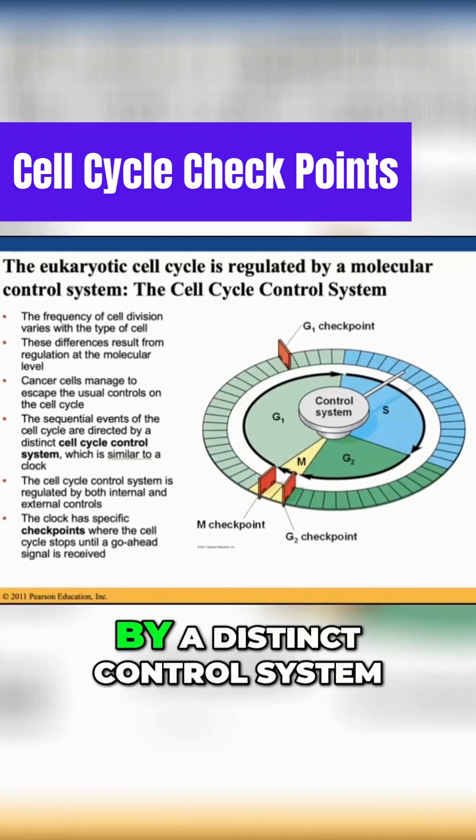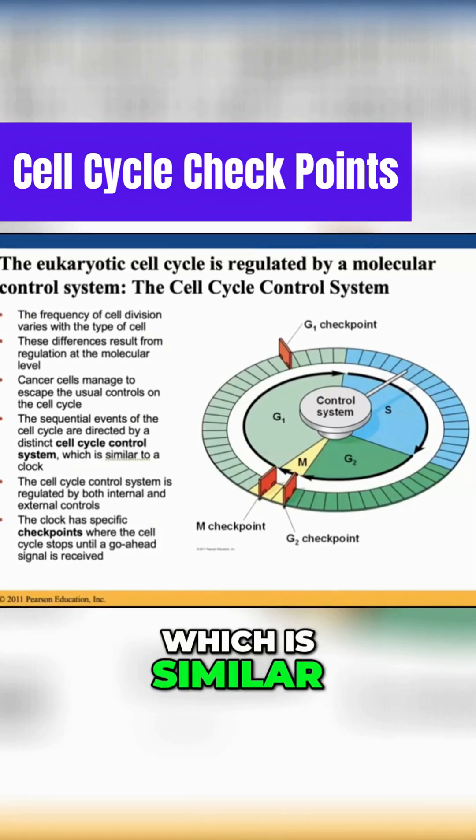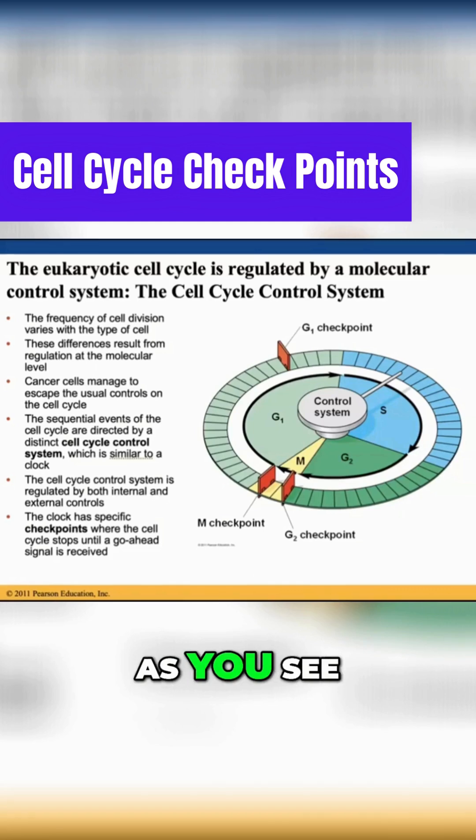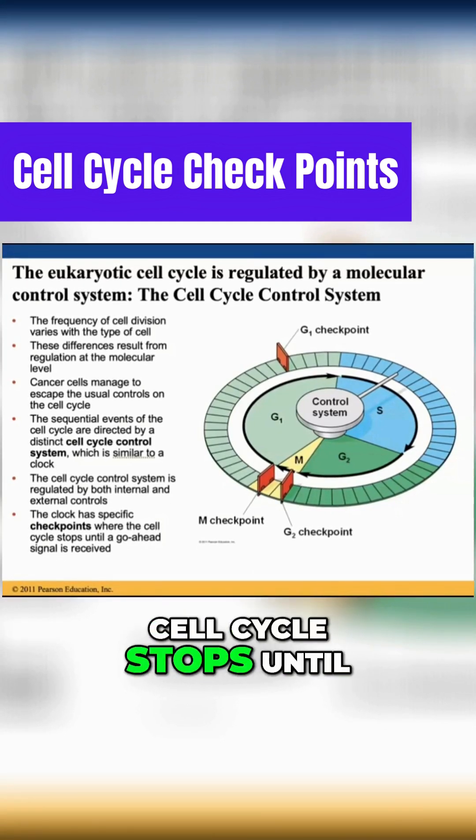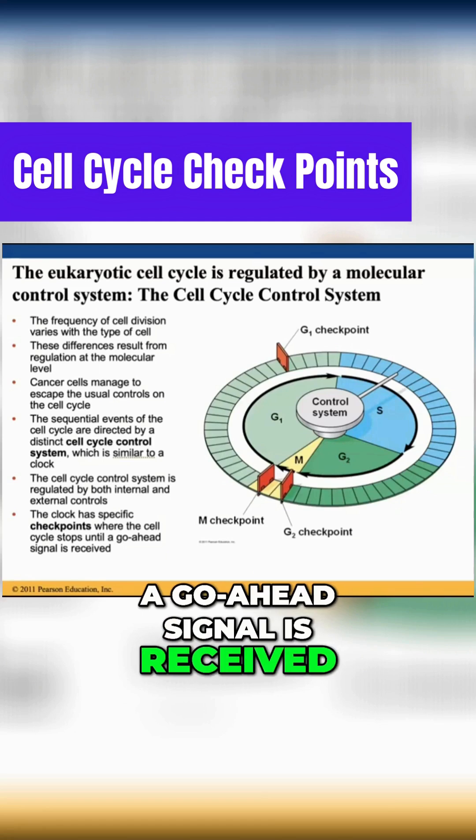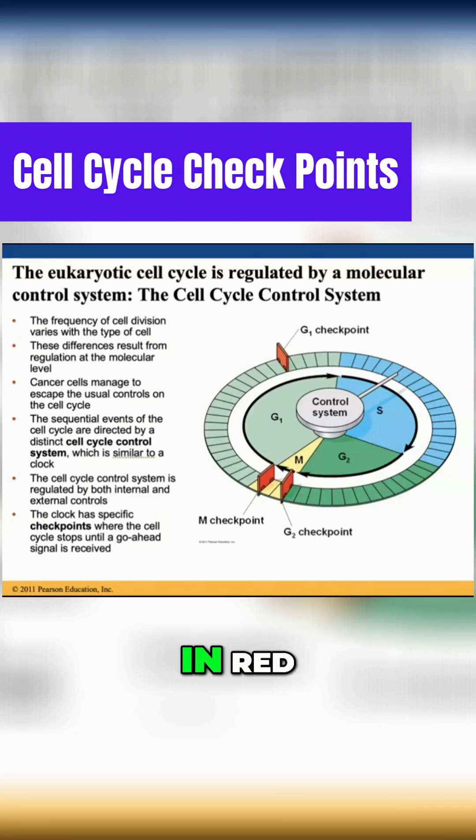Events of the cell cycle are directed by a distinct control system which is similar to a clock. As you see in the image, the clock has specific checkpoints where the cell cycle stops until a go-ahead signal is received. We see three distinct checkpoints here in red.